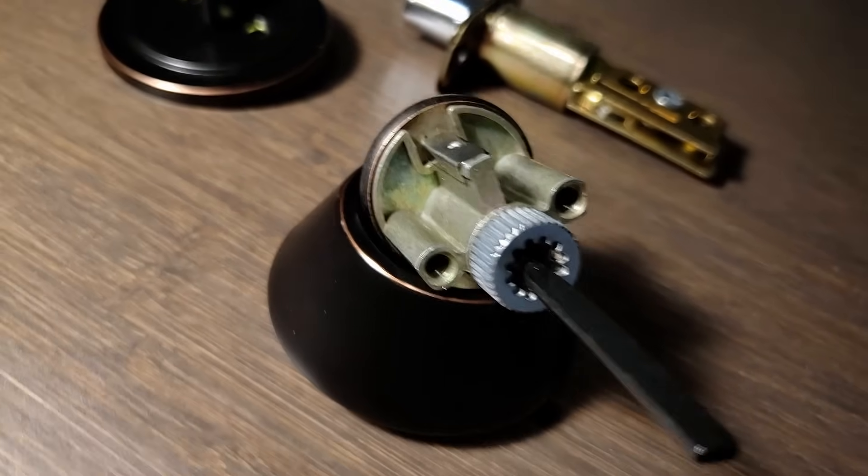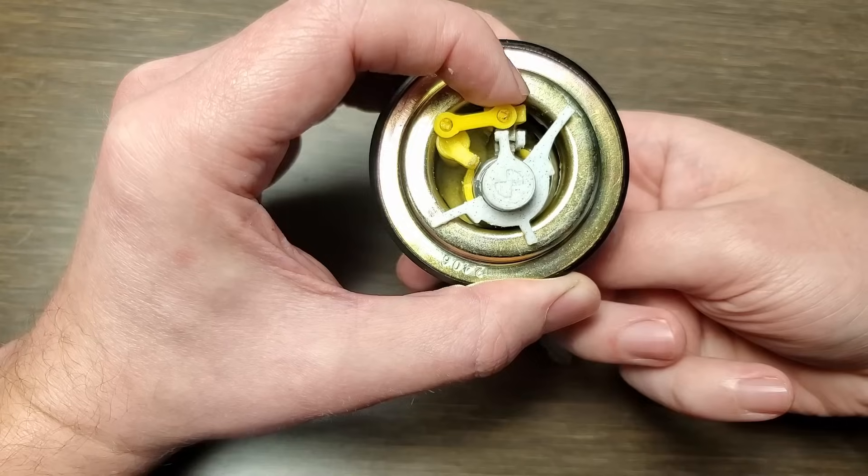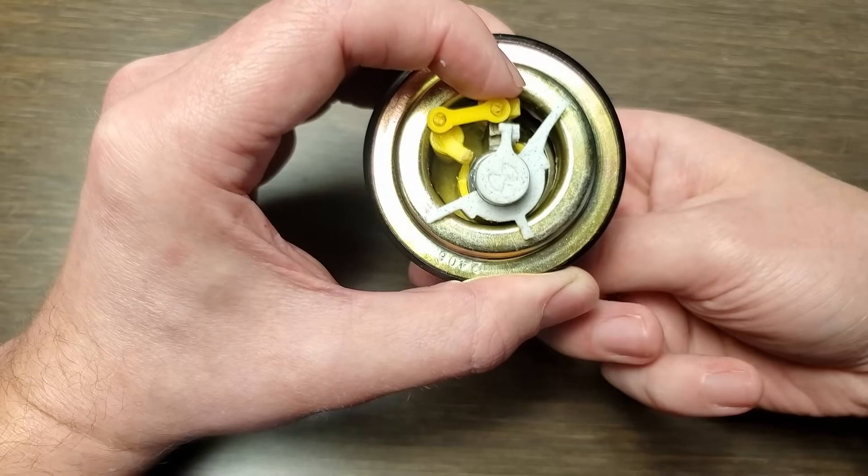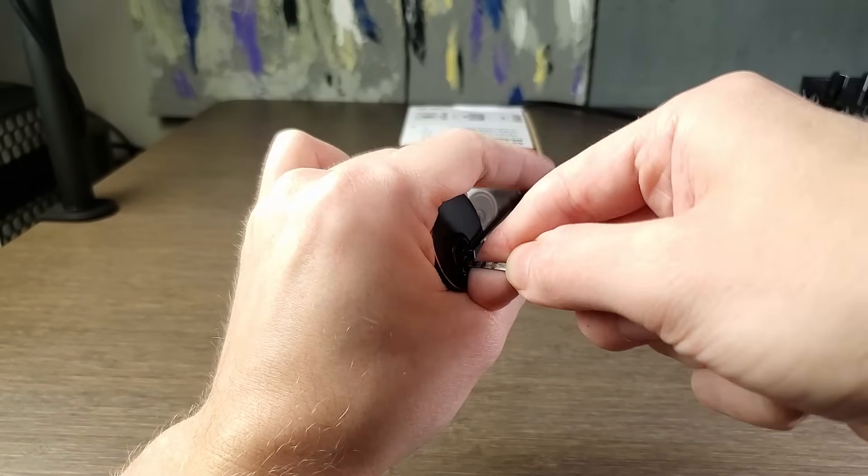Some of you might be thinking, well, what if you just turn it the other direction and bypass the mechanism entirely? Thankfully, the deadbolt hardware that came with the lock prevents this, so it's not a concern. But I did add a small bar here just to make that super obvious.